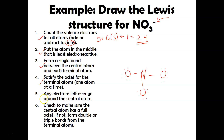We can't add any remaining electrons because I ran out of them. And finally, step six: check to make sure the central atom has a full octet — if not, form double or triple bonds from the terminal atoms. Nitrogen does not have a full octet — it only has six around it. So you can take an electron pair from any oxygen and make a double bond out of it. Because this is an ion, you would draw brackets around the ion and put the charge outside.